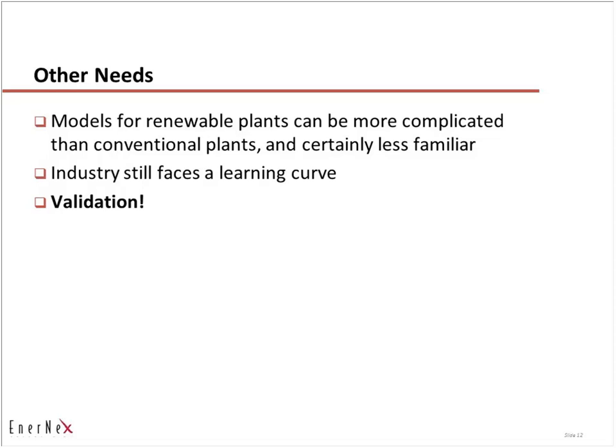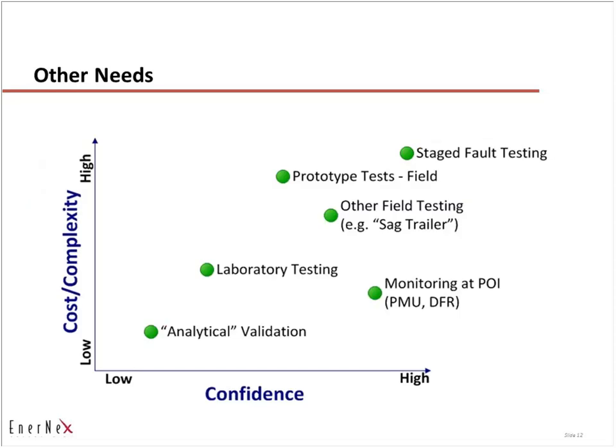Is it real or is it Memorex? We have models that, in the case of conventional generators, we have reason to believe represent actual facility performance pretty well. That question is much less answered for renewable plants. The scale and scope is daunting — there are probably more than 500 bulk-connected renewable plants in the ground. Plant model validation isn't just about whether GE has a good model for their turbine; it's about whether you've taken that model and constructed the appropriate representation for each of those 500 plants.